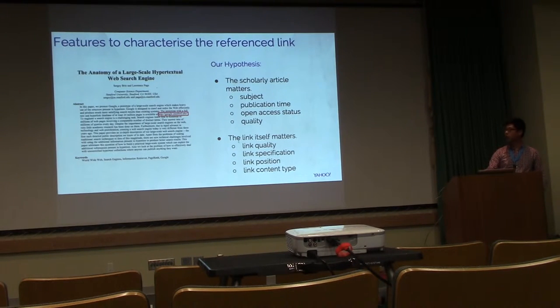We hypothesize there are two types of features that could be useful. One is from the scholarly article, and the other is from the links themselves. We hypothesize that, for example, links originating from a given subject, such as computer science, might be more likely to rot than education. Also, as we've shown before, links from articles that are published closer to the present are less likely to rot. Whether the publication is open access or not, and also the quality of the publication could have an impact.